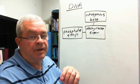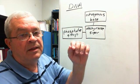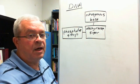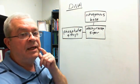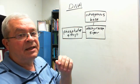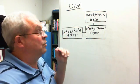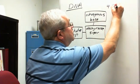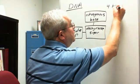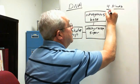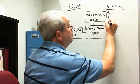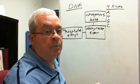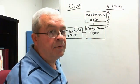In the previous videos I said that there are a total of five kinds of nitrogenous bases between DNA and RNA. DNA has four of those — four kinds of nitrogenous bases — and they can be remembered very easily by thinking of an acronym.